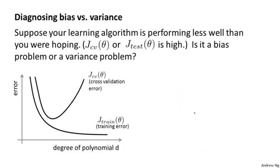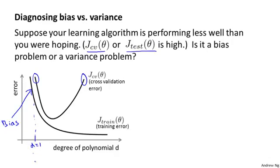Suppose you've applied a learning algorithm and it's not performing as well as you were hoping — your cross-validation or test set error is high. How can we figure out if it's suffering from high bias or high variance? A high cross-validation error corresponds to either the left regime or the right regime of our plot. The left regime corresponds to a high bias problem — fitting an overly low order polynomial when a higher order is needed. The right regime corresponds to a high variance problem — where d, the degree of polynomial, was too large for the dataset.